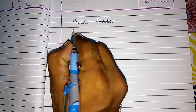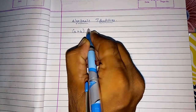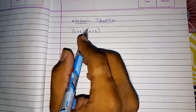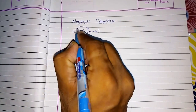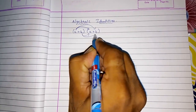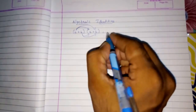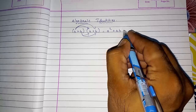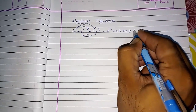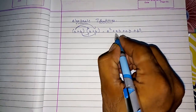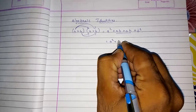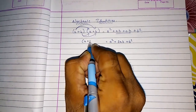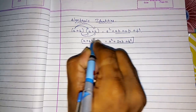Look here, if I am having two polynomials — suppose A plus B — and if I want to multiply this polynomial with the same polynomial, first I will multiply A with these two terms, then I will multiply B with these two terms. So what I will get? A into A gives A square, A into B gives AB, then B into A gives AB again, then B into B gives B square. These two are like terms, so I can write A square plus 2AB plus B square. And A plus B into A plus B is A plus B whole square. So this is our identity number one.